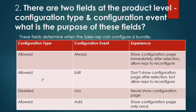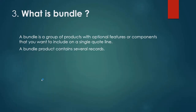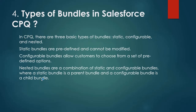What is a bundle? A bundle is a group of products with optional features or components that you want to include in a single quote line. A bundle product contains revenue records. Types of bundles in Salesforce CPQ: there are three basic types — static, configurable, and nested. Static bundles are predefined and cannot be modified. Configurable bundles allow customers to choose from a set of predefined options. Nested bundles are a combination of static and configurable bundles, where a static bundle is the parent and a configurable bundle is the child.